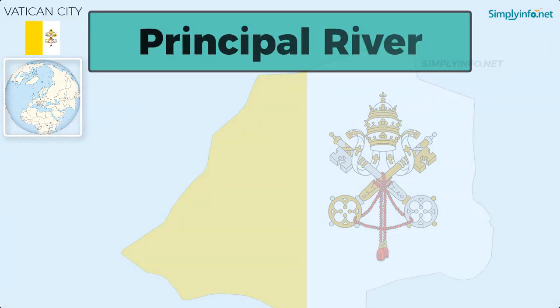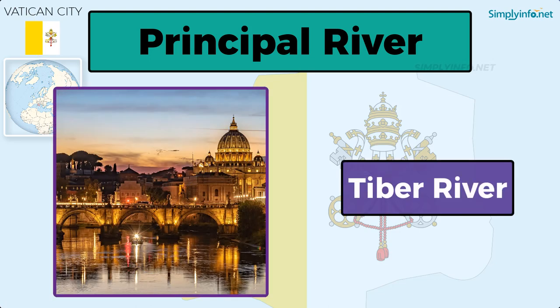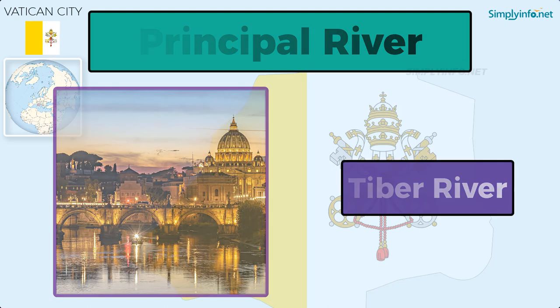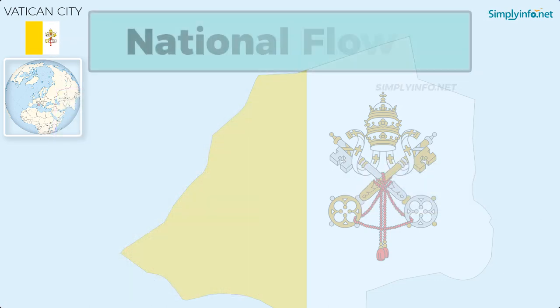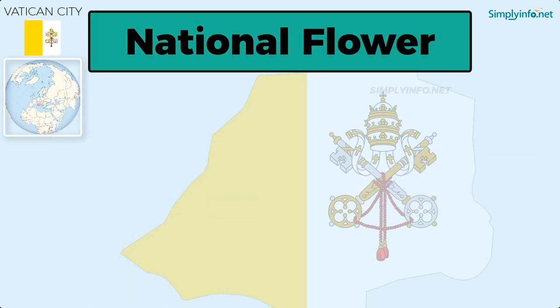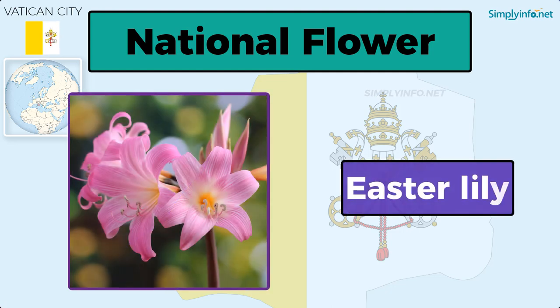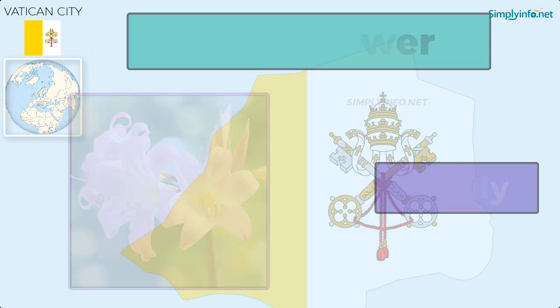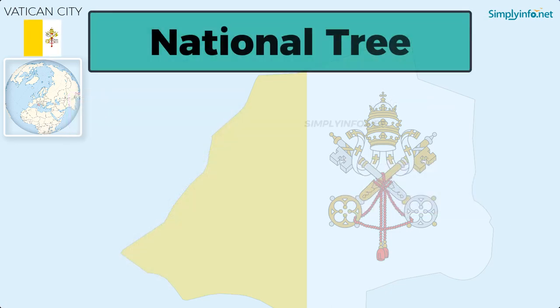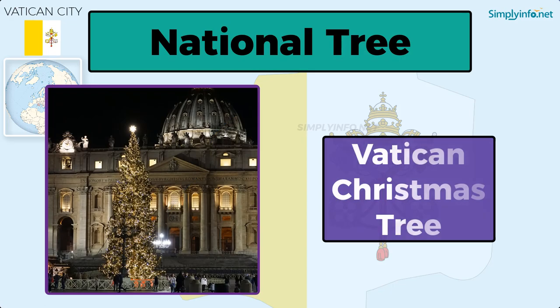Principal river: Tiber River. National flower: Easter Lily. National tree: Vatican Christmas Tree.